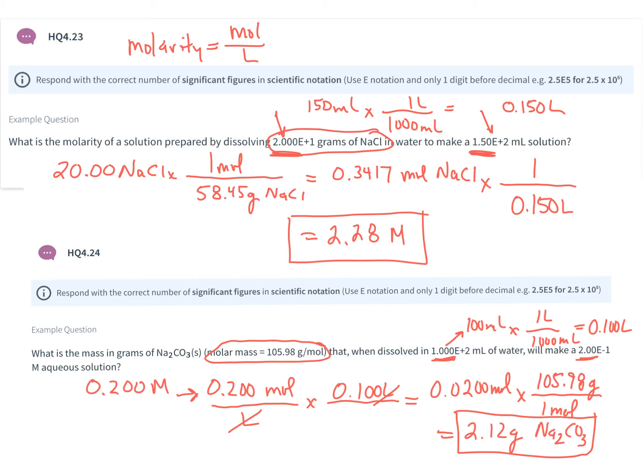So question 23 is a pretty straightforward and direct question. Question 24 should be straightforward as well because we're just doing the steps in the opposite direction. We're going from concentration to mass.